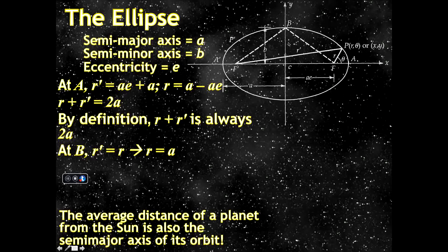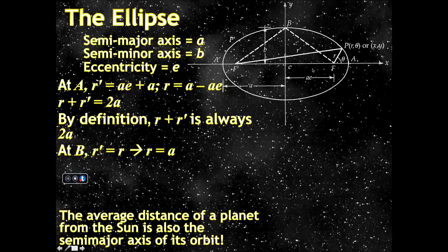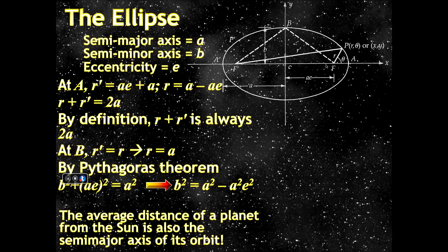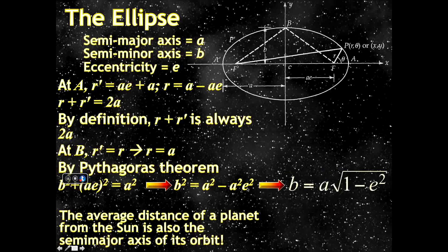At point B, at the end of the semi-minor axis, R and R prime are equal and both equal A. We can apply the Pythagorean theorem: B squared plus (AE) squared equals A squared, since this is the right angle and A is the hypotenuse. This gives us the relationship between the semi-major axis, semi-minor axis, and eccentricity: the semi-minor axis B equals the semi-major axis A times the square root of 1 minus E squared.